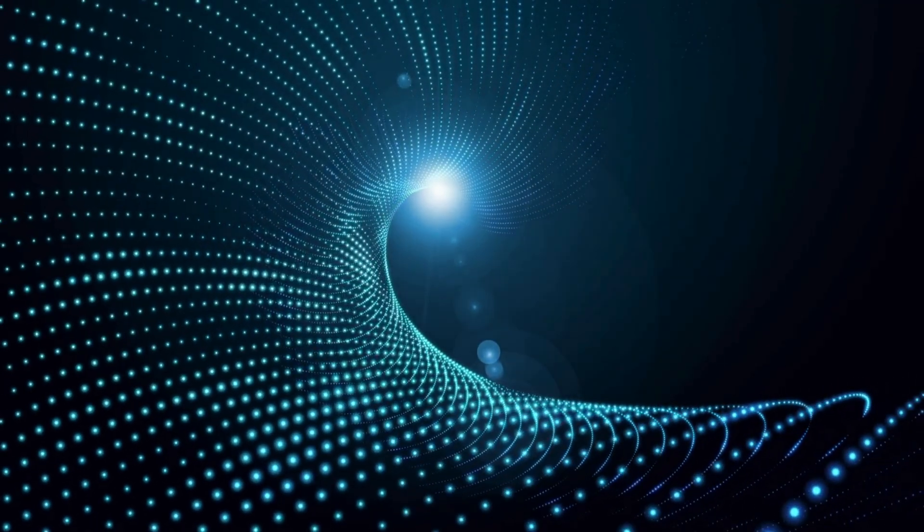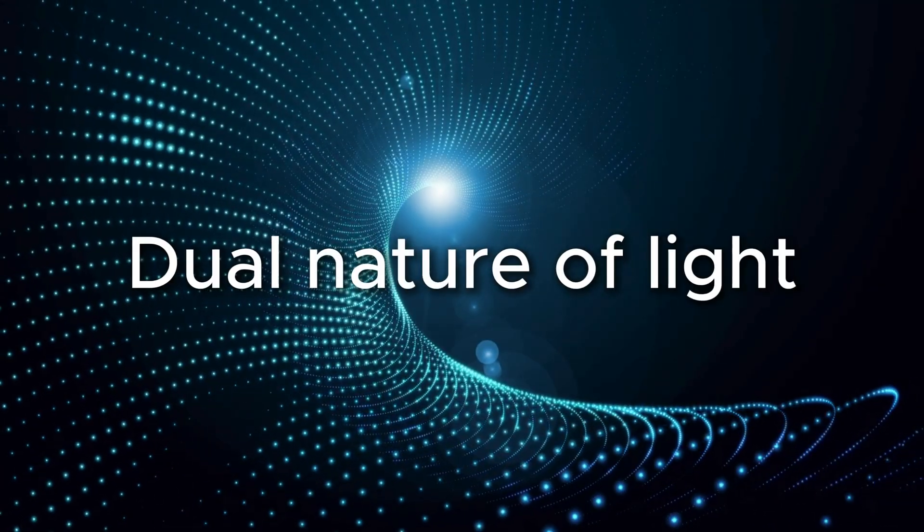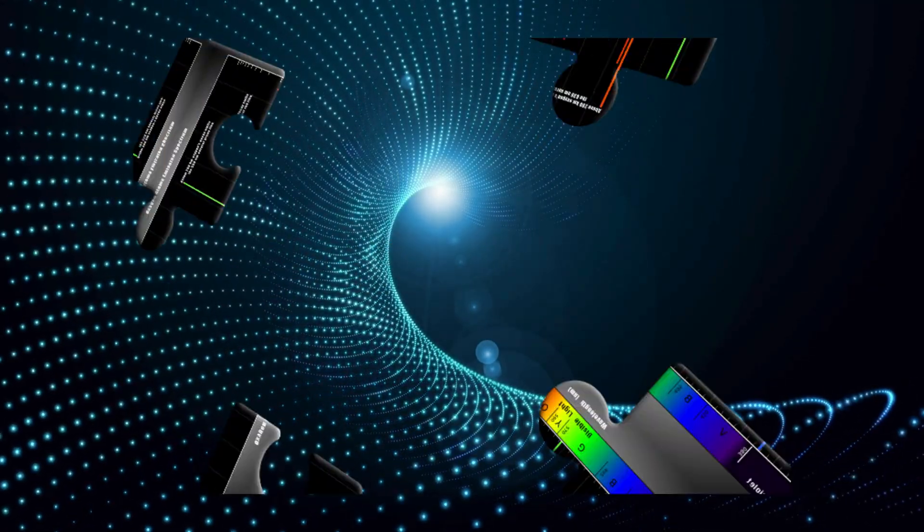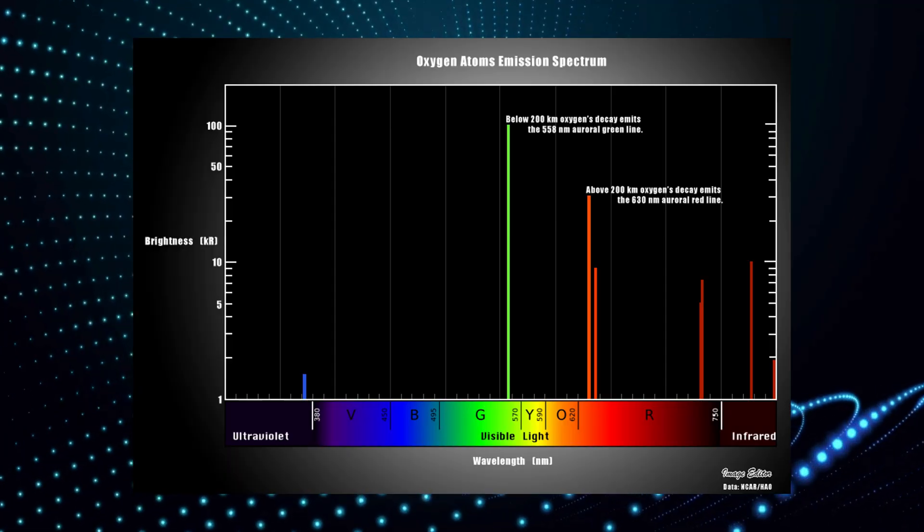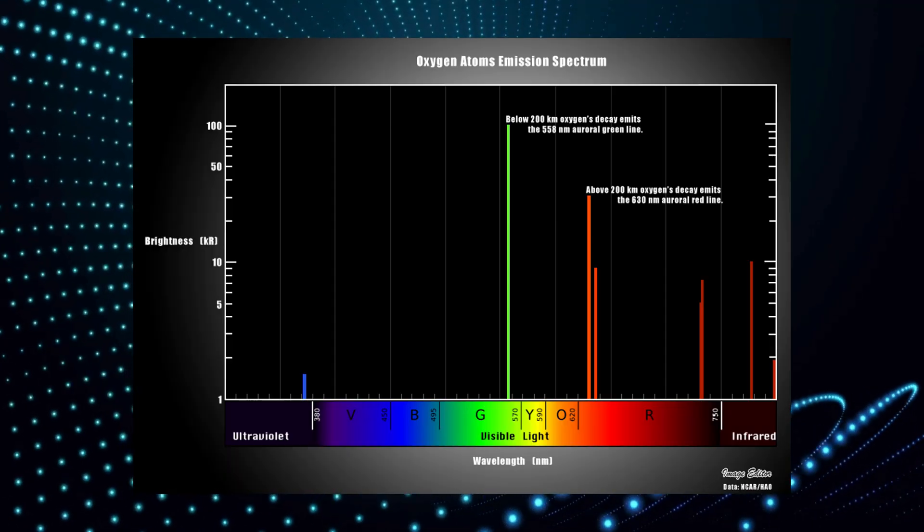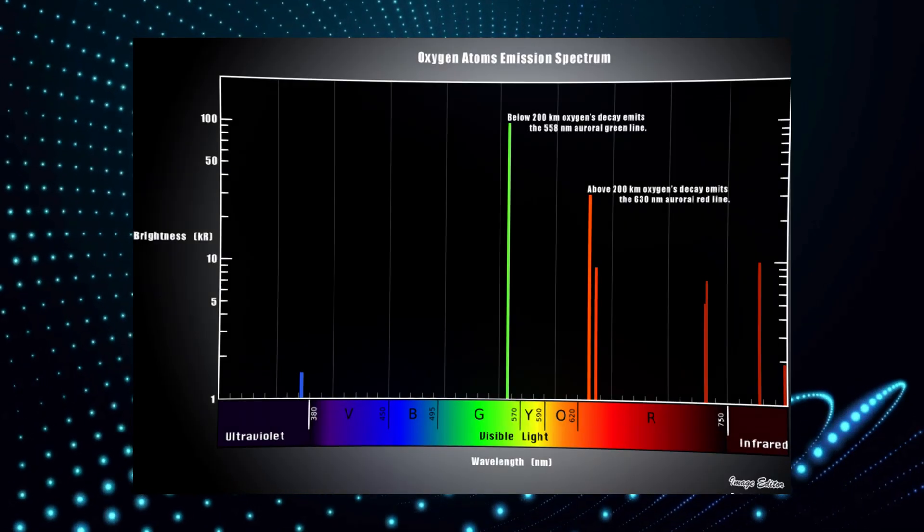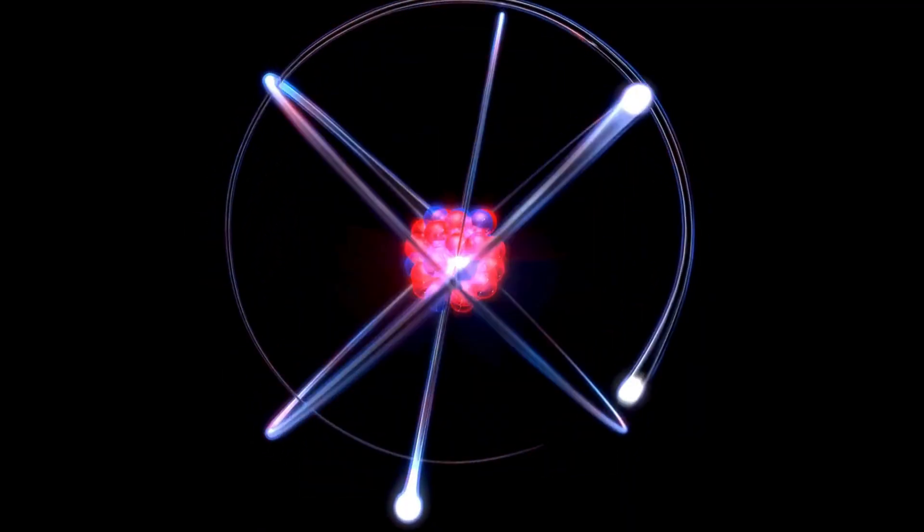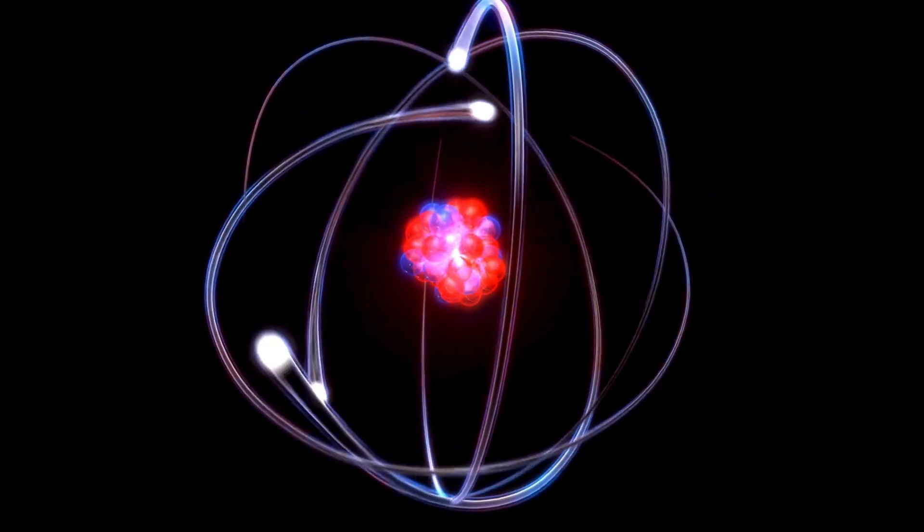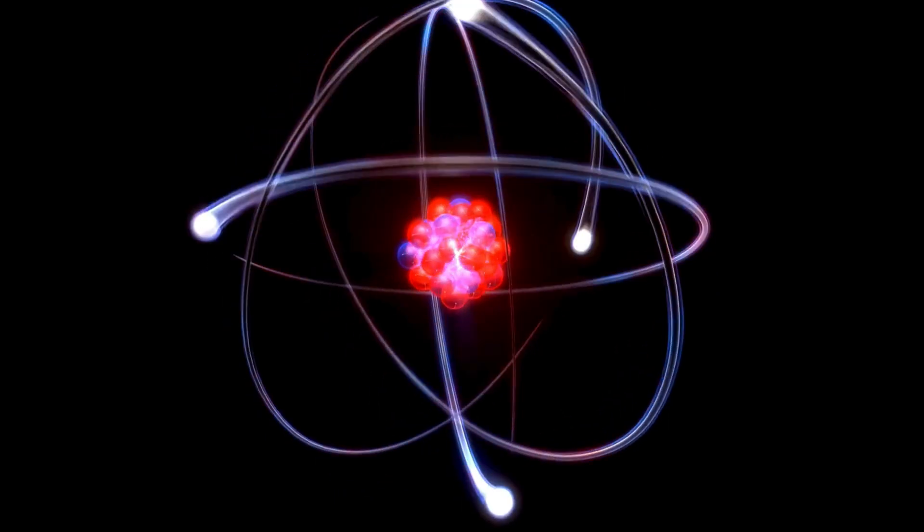Light, for instance, sometimes acted like a wave, other times like a stream of particles. Atoms didn't emit smooth spectrum of colours, as predicted by classical physics, but instead released discrete, sharp lines. It was Niels Bohr who proposed a bold explanation that electrons orbit the nucleus in fixed energy levels, and these spectral lines appeared when electrons jumped between them.